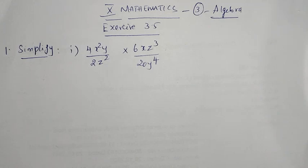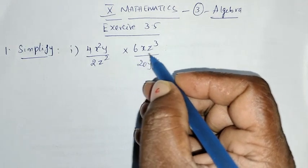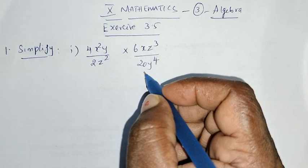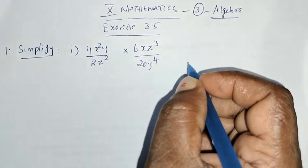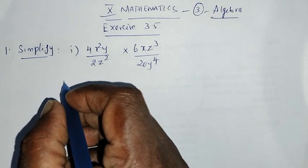4x²y divided by 2z² into 6xz³ divided by 20y to the power 4. This is a very important question, Public Exam in 2019.